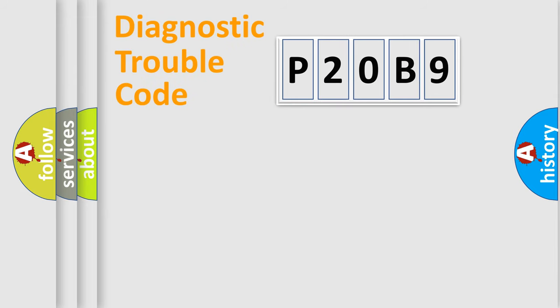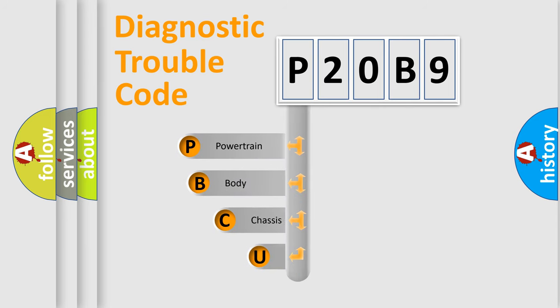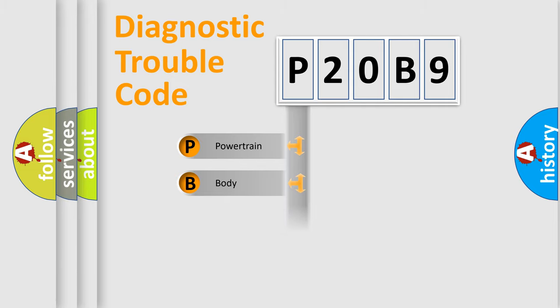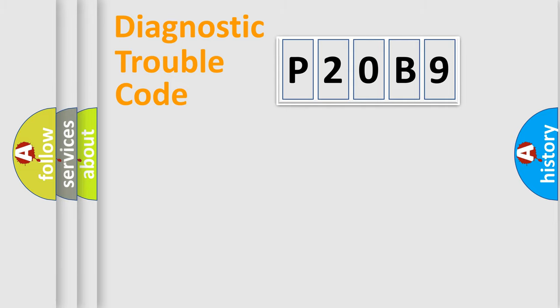Let's do this. First, let's look at the history of diagnostic fault code composition according to the OBD2 protocol, which is unified for all automakers since 2000. We divide the electric system of the automobile into four basic units: Powertrain, Body, Chassis, and Network.